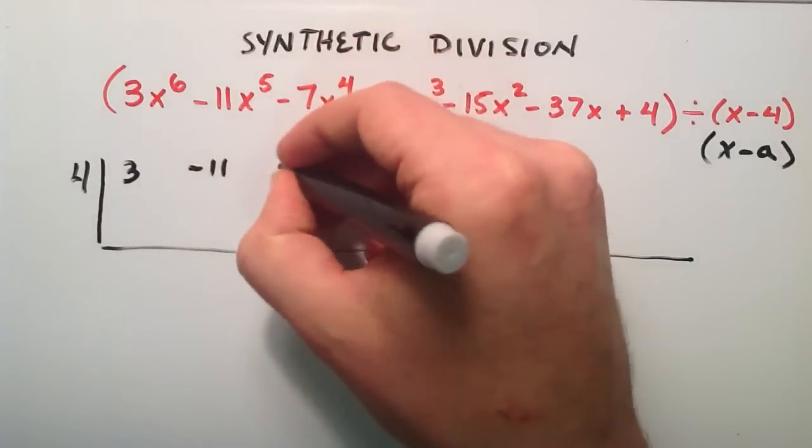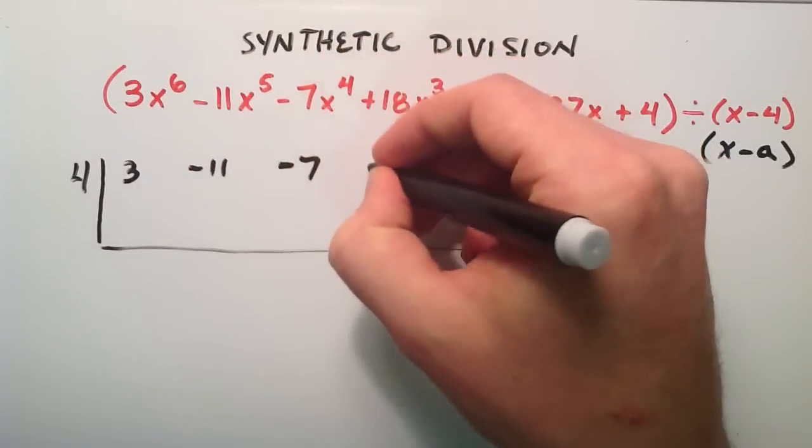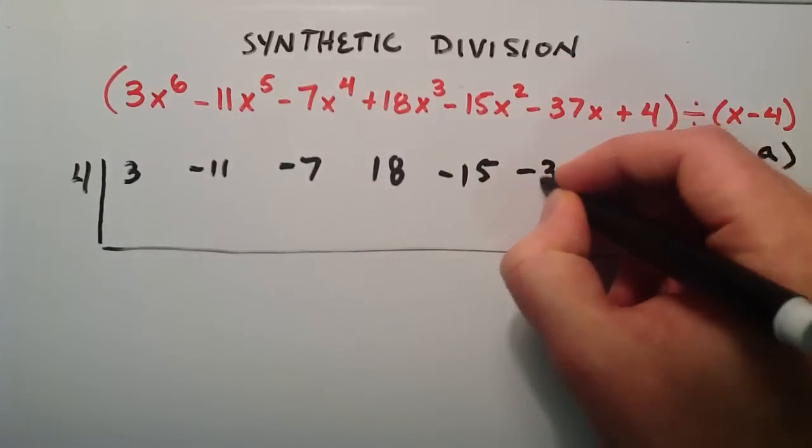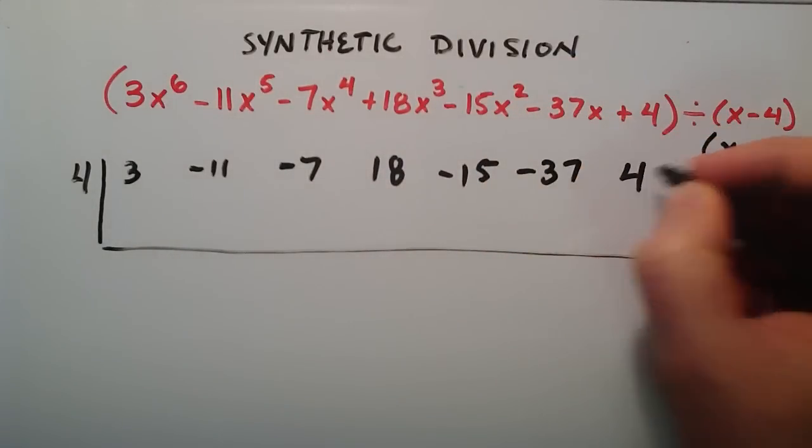the negative 11, the negative 7, the 18, negative 15, negative 37, and a positive 4.